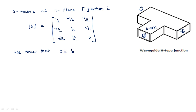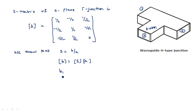We know that S = b/a, or we can write b = S·a. In matrix form: [b] = [S][a]. The H-plane T-junction has three ports, so we have incident waves a1, a2, a3 and reflected waves b1, b2, b3. Here 'a' represents the incident wave and 'b' represents the reflected wave.